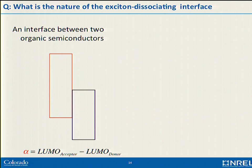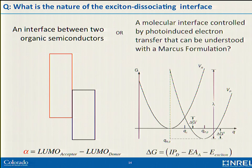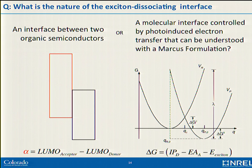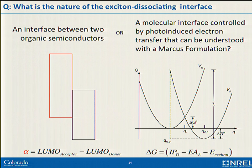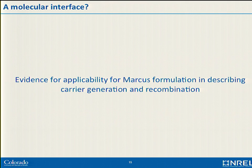The remainder of this presentation is an argument: should we be using the diagram with LUMO offsets and driving force alpha for turning excitons into free carriers, or should we be talking about a molecular interface where the Marcus formulation is applicable? In Marcus theory the driving force is not LUMO separation but a Gibbs driving force with the ionization potential of your polymer, electron affinity of your acceptor, and the exciton energy. I'm going to show you that this is a far more applicable model.